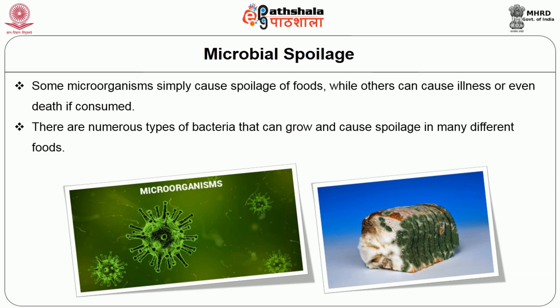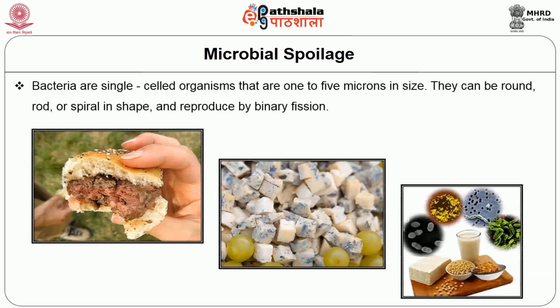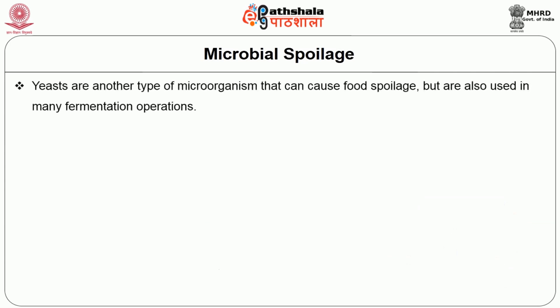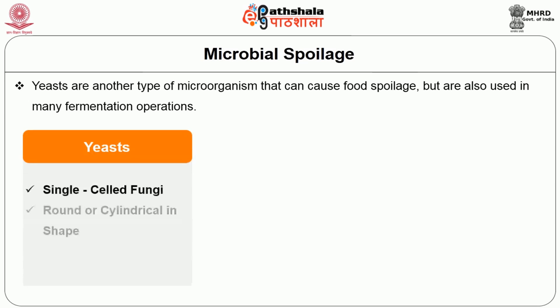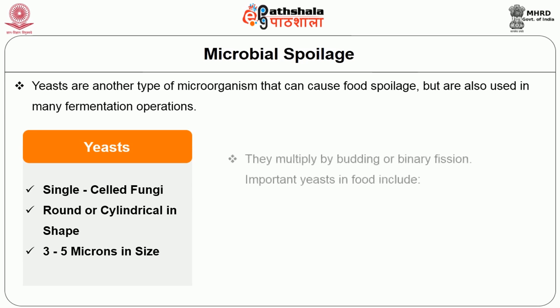There are numerous types of bacteria that can grow and cause spoilage in many different foods. Bacteria are single-celled organisms that are 1 to 5 microns in size. They can be round, rod, or spiral in shape and reproduce by binary fission. Yeast are another type of microorganism that can cause food spoilage but are also used in many fermentation operations. Yeast are single-celled fungi that are round or cylindrical in shape and 3 to 5 microns in size. They multiply by budding or binary fission. Important yeast in food include Candida species, Dekkera species, and Saccharomyces species.